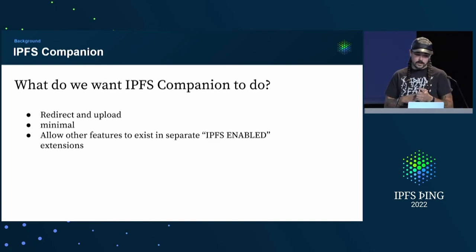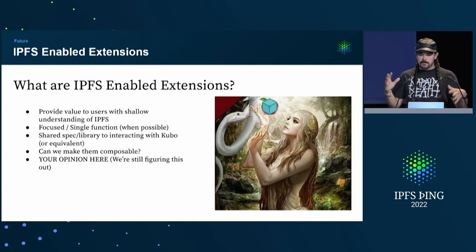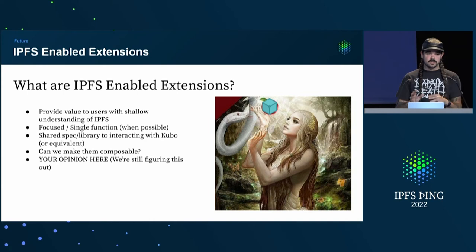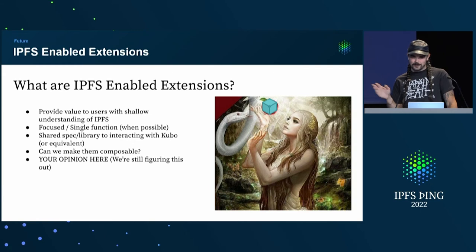Take this as an opportunity to just redesign this. What I think is that we should basically just redirect and allow uploading — keep it as minimal as possible — and then pull out other features into IPFS-enabled extensions, and continue to build on that. The intention of an IPFS-enabled extension would be to provide value to users with a shallow understanding of IPFS. They don't really have to understand too much about IPFS, don't have to dig into diagnostics. Hopefully they just install something — like Dietrich was talking about before — where I just want to pin something from Wikipedia to IPFS, pin a tweet, pin a YouTube video and make sure I can access it forever without having to understand IPFS. Hopefully this is like a gateway drug to people understanding IPFS.